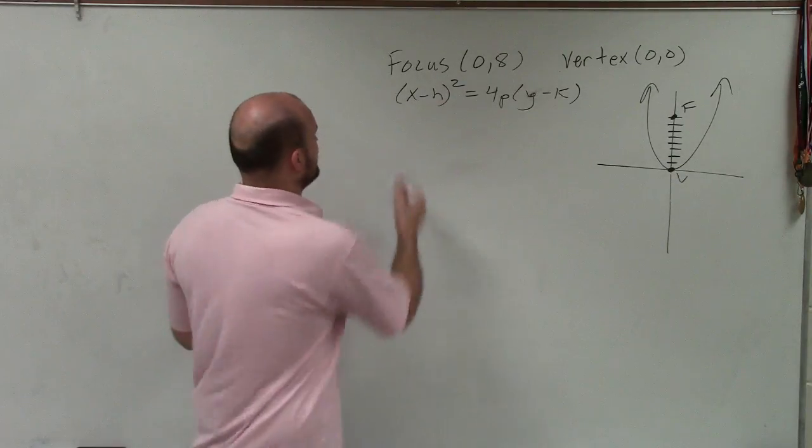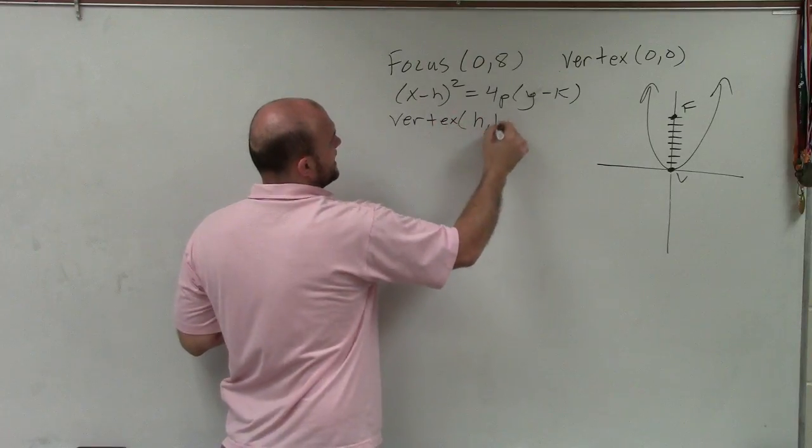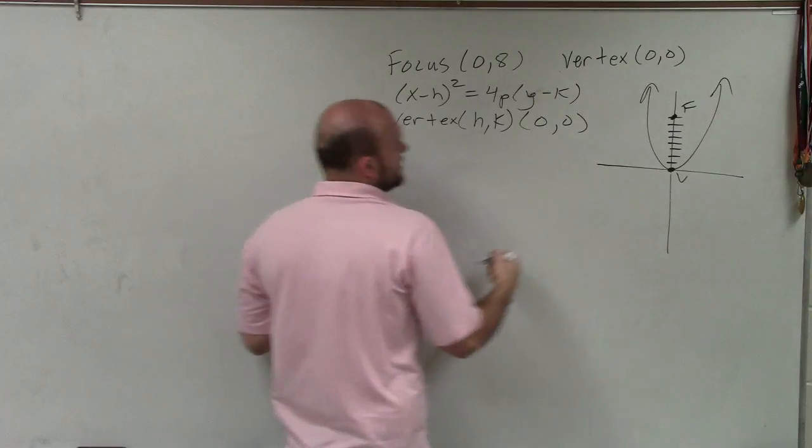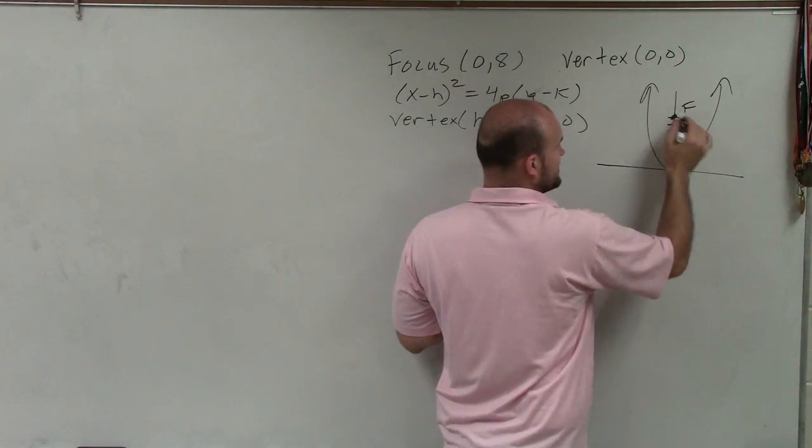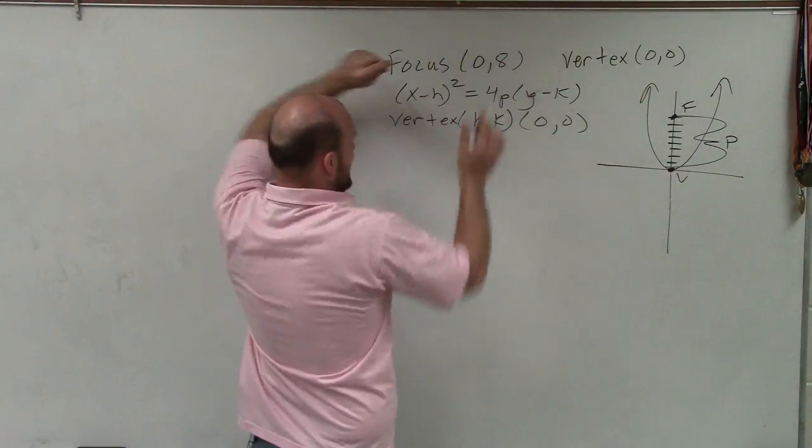So remember, the vertex is represented by our coordinates h comma k, which in this case is 0 comma 0. And also remember that the distance from your vertex to your focus is p. In that case, it is 8.